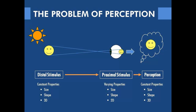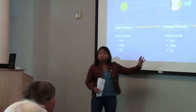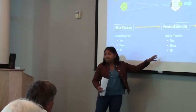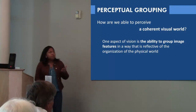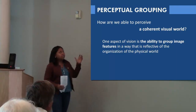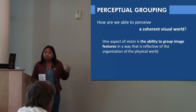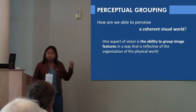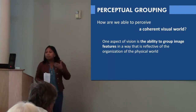Especially when you think about the fact that we have a three-dimensional world that is projected as a two-dimensional retinal image, and yet we still have a perception that's three-dimensional. Somehow our brains have to process these 2D images and make sense of them. A big part of our visual system is our ability to group image features and organize incoming information.